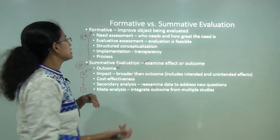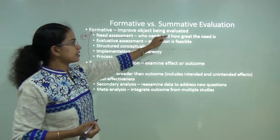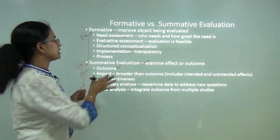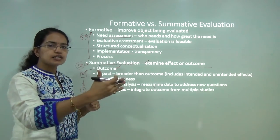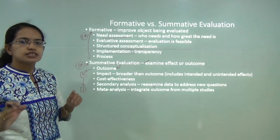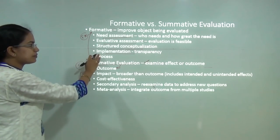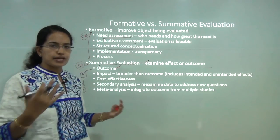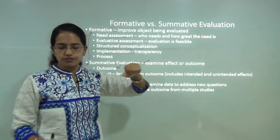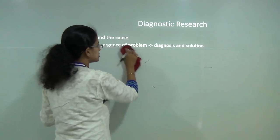Formative evaluation aims to improve the object being evaluated so it performs better — it is a kind of midterm assessment to help the participant understand how to perform better next time. It involves four strategies: need assessment, to understand who needs what and how important that need is; evaluability assessment, to see whether evaluation is feasible in that region; structured conceptualization, ensuring the participant has a conceptual foundation; and implementation, which should be transparent with no bias.